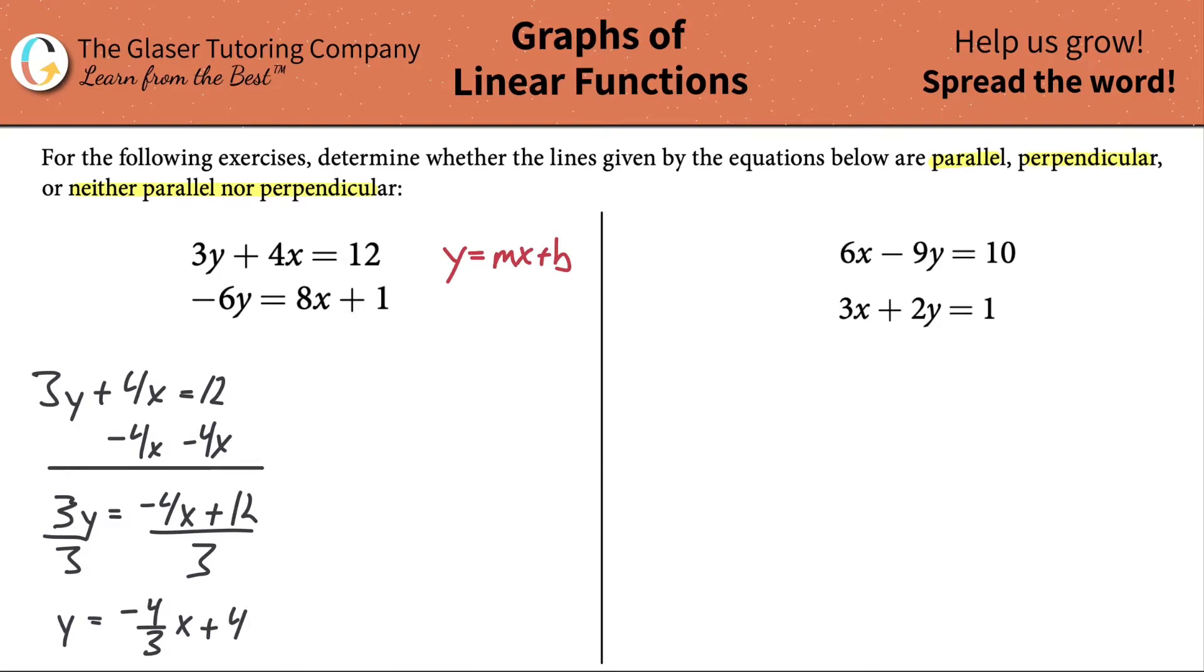Now this is the formula, the equation of a line for the first equation. Which of the values here indicates the slope? It turns out to be the negative 4 thirds. That is the m in the linear equation line.